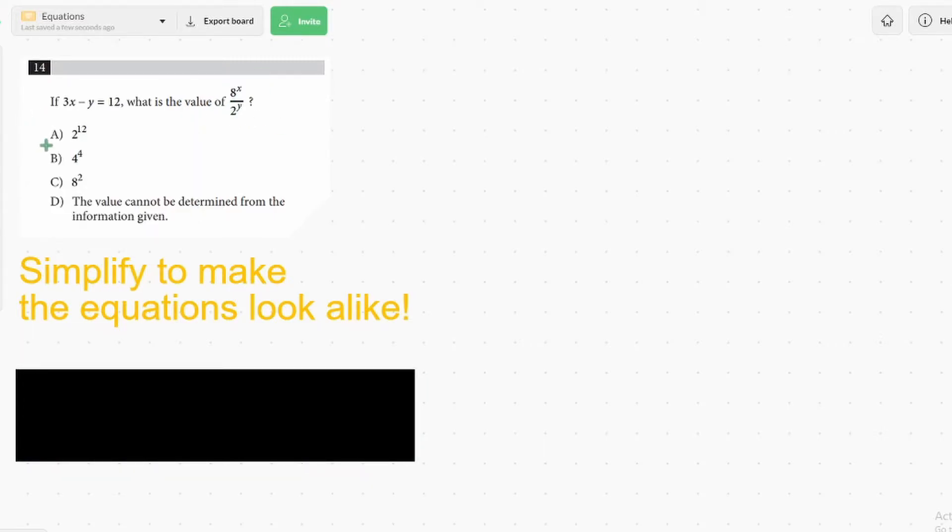So here we have another system of equations, one involving variable exponents. We know that we got the 8 to the x, the 2 to the y, so we can't really solve for one variable there. The best we can do is if we look at this equation, we can get this looking something like 3x minus y. So let's get into that.